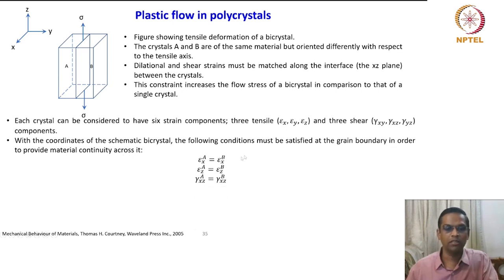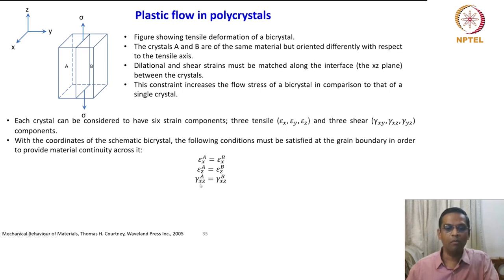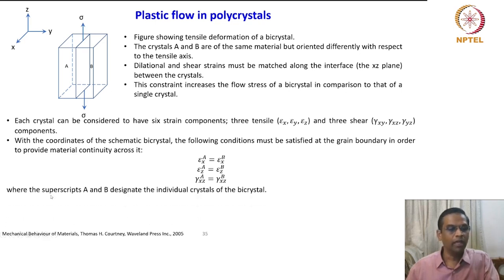What are those conditions? Epsilon X of A should be equal to epsilon X of B; epsilon Z of A must equal epsilon Z of B; and gamma XZ of A should equal gamma XZ of B. That is the compatibility condition, where the superscripts A and B designate the individual crystals of the bicrystal.